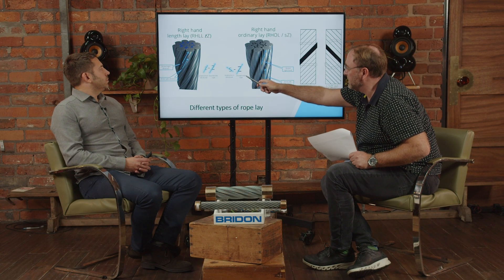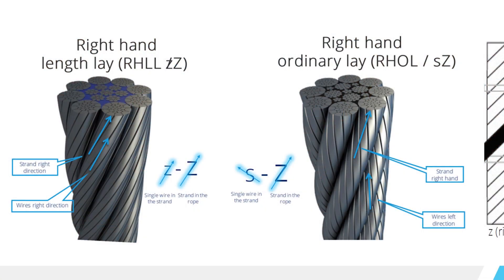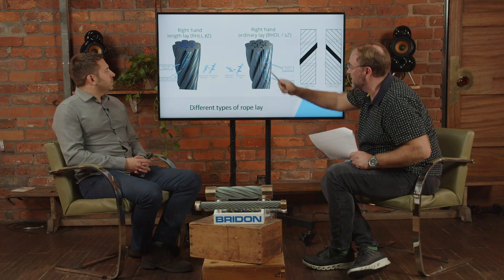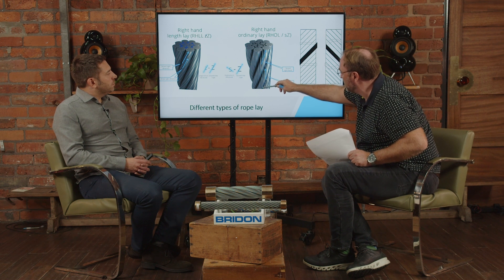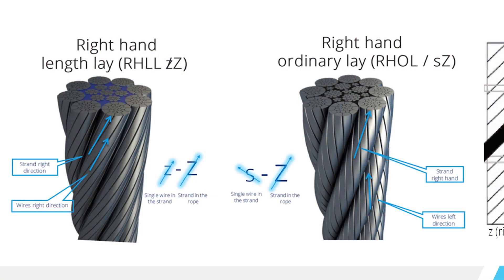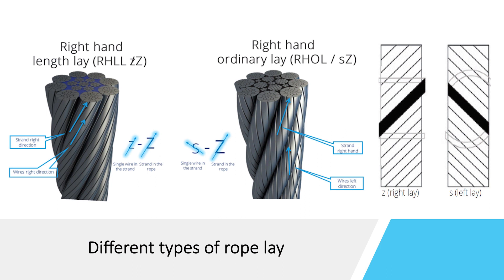We also talk about an ordinary lay rope, also called regular lay rope, or a Lang lay rope. You can see on the screen on the left side a right hand Lang lay rope — the outer strands go from the lower left to the upper right, and the single wires in the outer strand follow the same direction. With an ordinary lay rope, the single wires run across the lay direction of the outer strand. For a right hand Lang lay rope we use the letters Z-Z, and for a right hand ordinary lay rope we use S-Z.